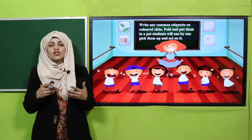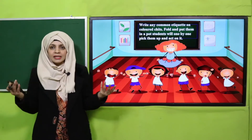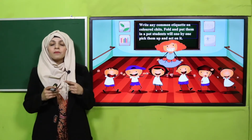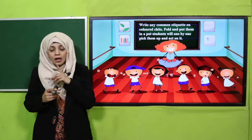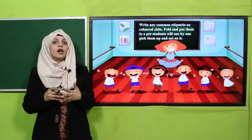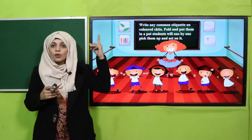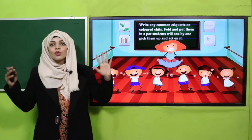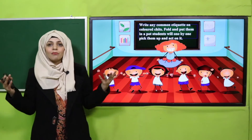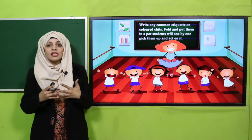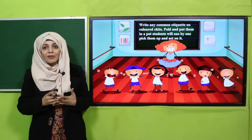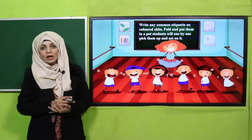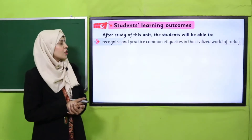Students will one by one pick them up and act on it. The teacher can write any etiquettes — for example: stay quiet in the class, do not hurt others, raise your hands. This is how you write different manners and etiquettes on the chits, and students have to perform them. It will be really fun!